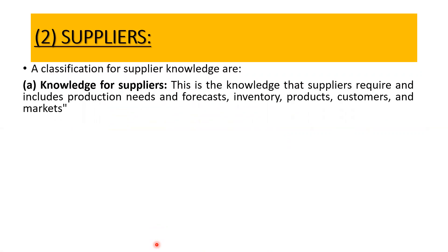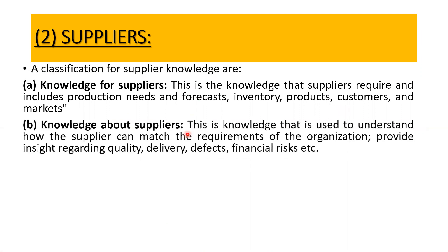A classification for supplier knowledge: knowledge for the supplier covers needs and forecasts, inventory, products, customers, and markets. Knowledge about the supplier helps understand how the supplier can match the requirements of the organization — it could be insights regarding quality, delivery, defects, and financial risk. We can assess how good the quality of products from suppliers is, whether they deliver on time, any defects included, and any financial risk to consider.